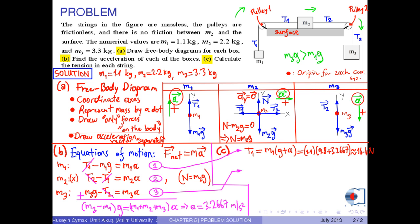Finally, from equation 3, we have T2 equals M3 times G minus A. As a result, we obtain approximately 21.6 Newtons. This is the tension on the string connecting M2 and M3.